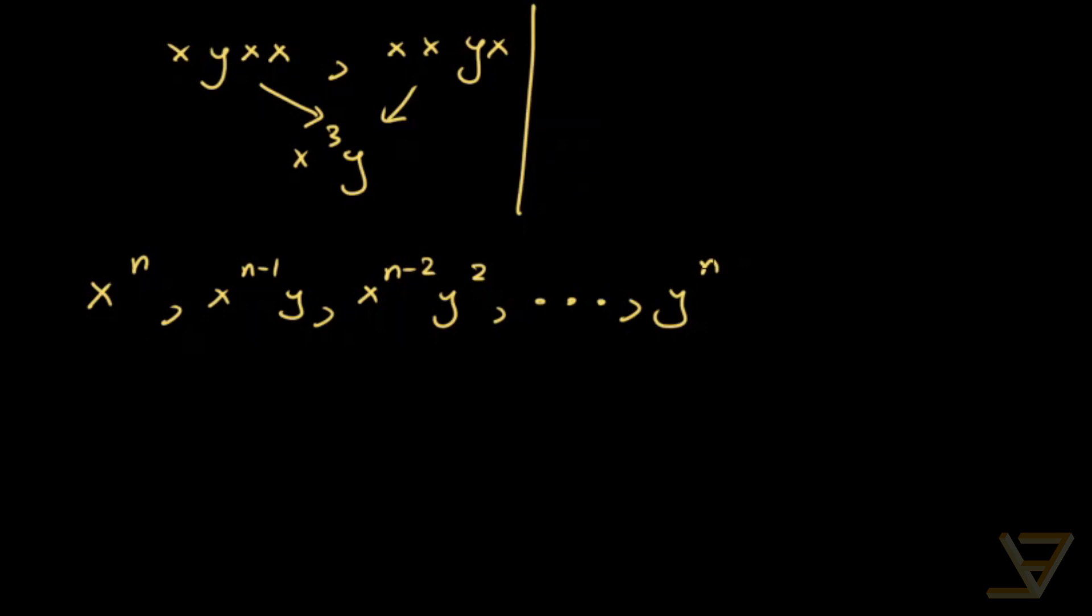And now we're just going to be permuting these collections. The number of ways of permuting n x's is simply n choose 0. The number of ways of permuting n minus 1 x's and a y is n choose 1. The number of ways of permuting n minus 2 x's and 2 y's is n choose 2. And we keep going like this until we have the number of ways of choosing n y's and 0 x's as n choose n.